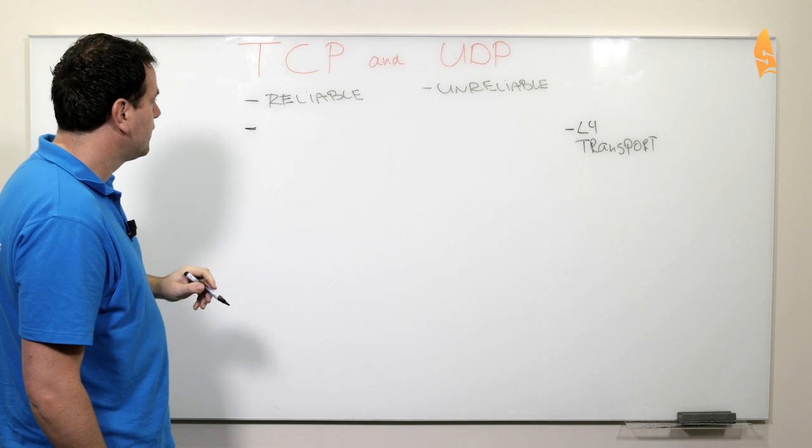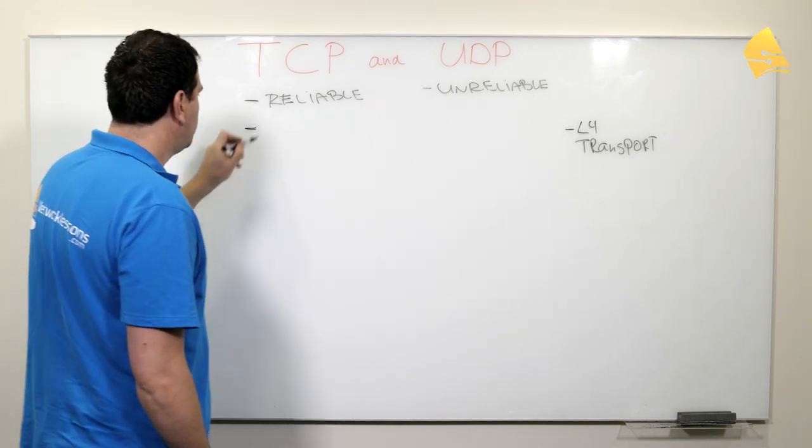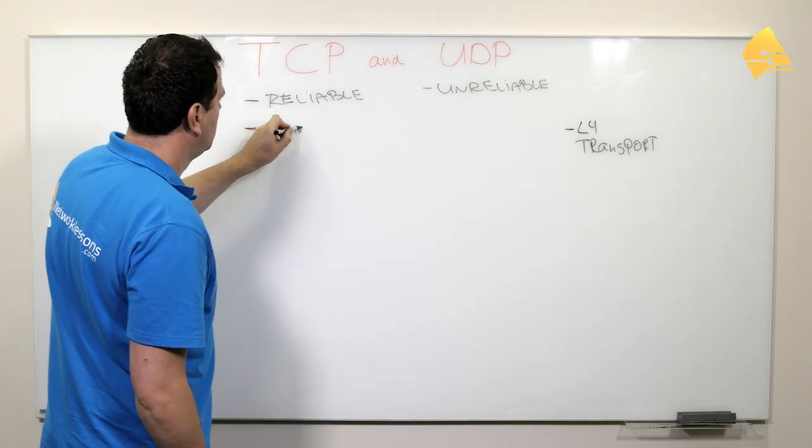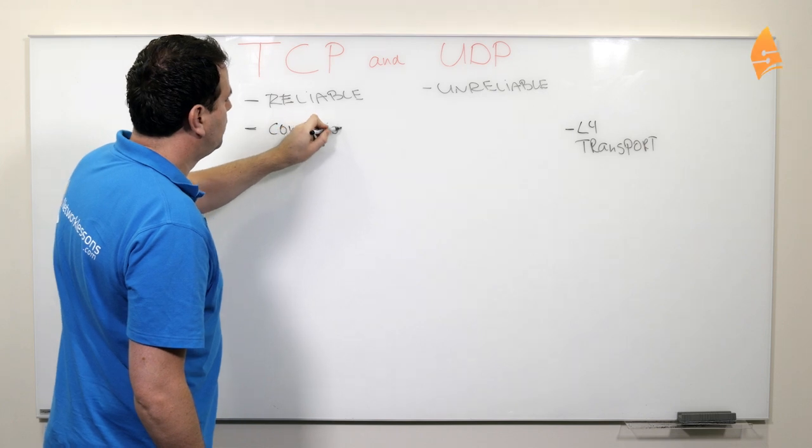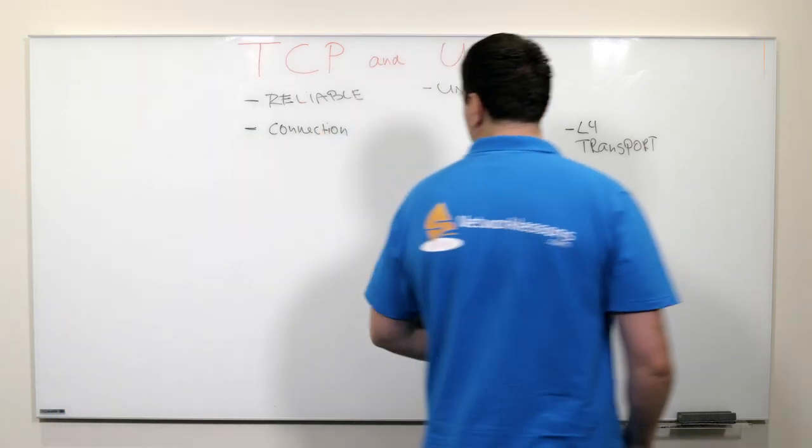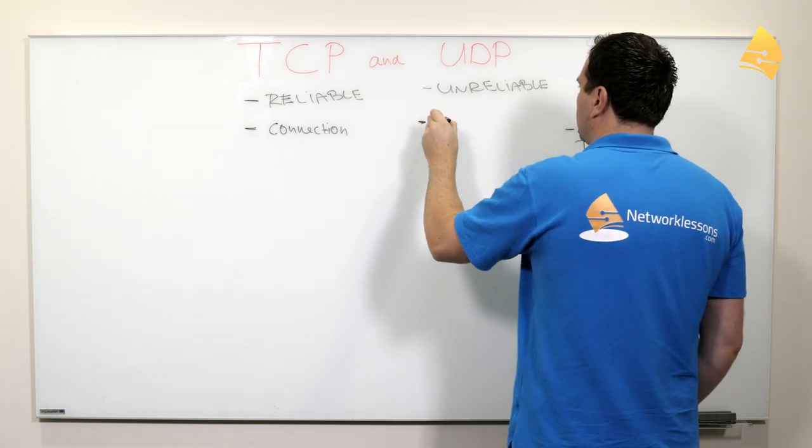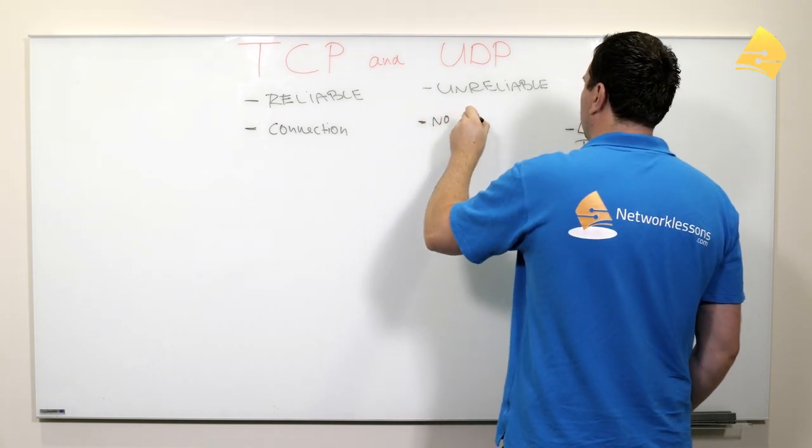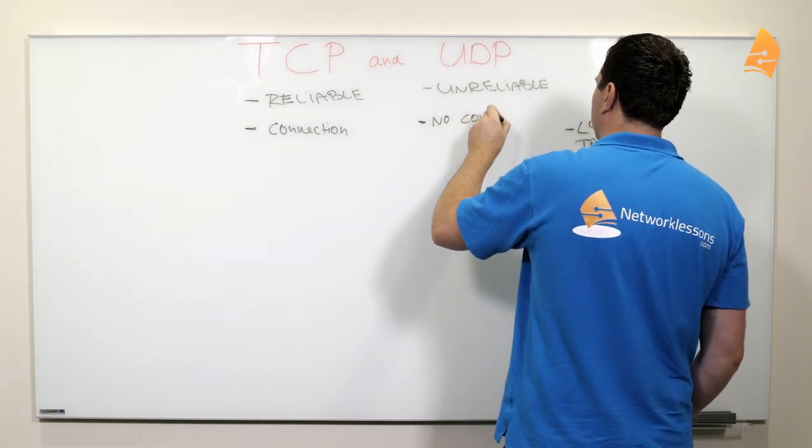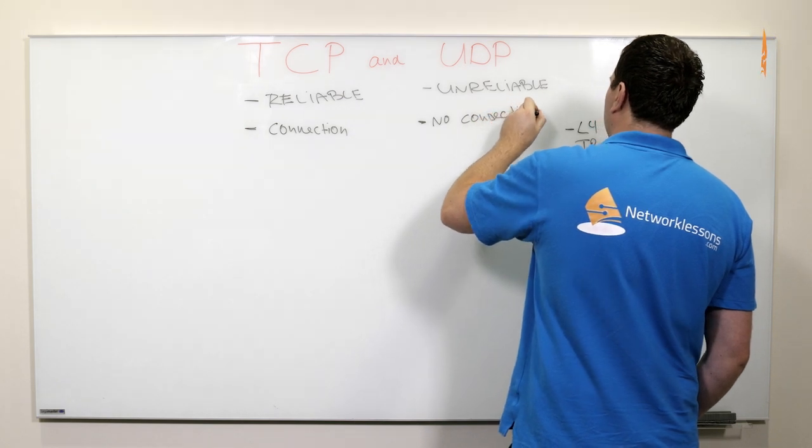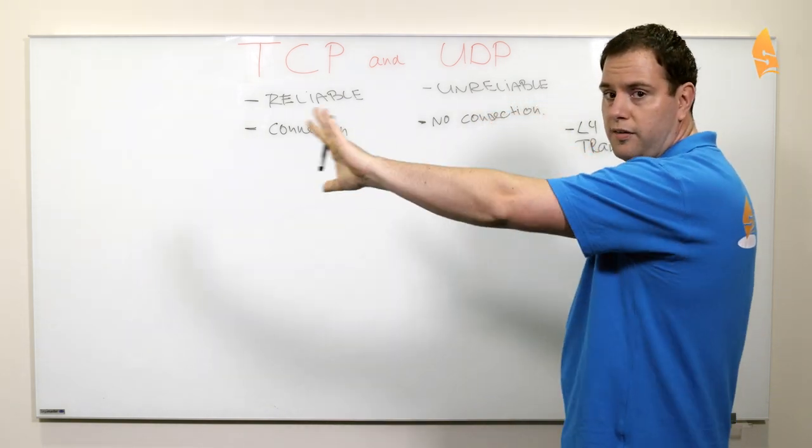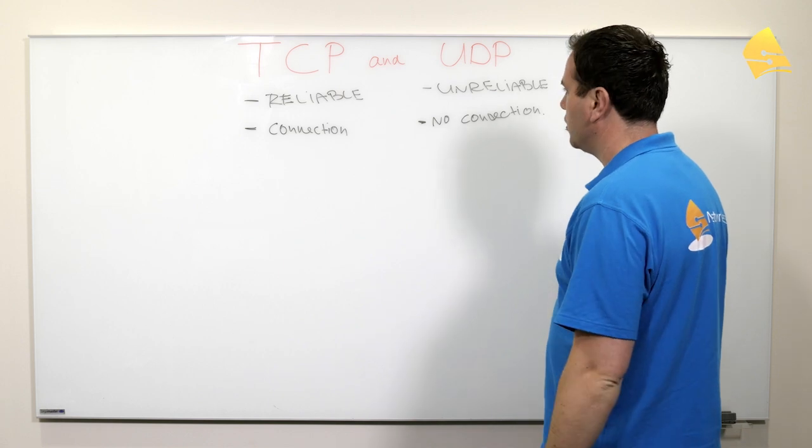The second thing, TCP creates a connection. So before we send any data, TCP will set up a connection and UDP doesn't do this. So it doesn't create a connection, it just sends the data from one host to the other.